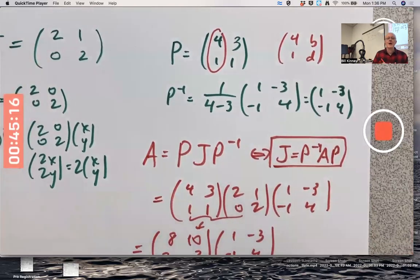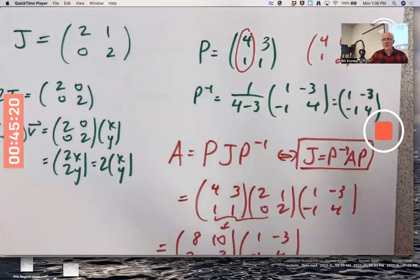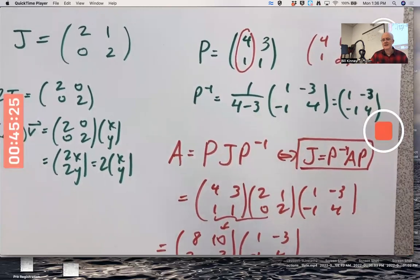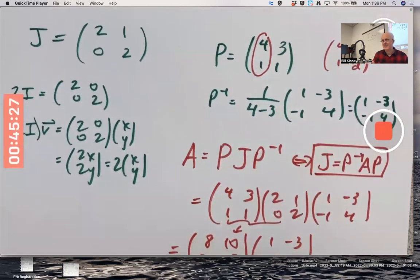Hard concept. I'm trying to make it as easy as possible. And Jordan canonical form is an advanced topic. I'm introducing it here in a two by two context to make it as easy as possible.